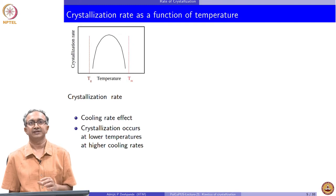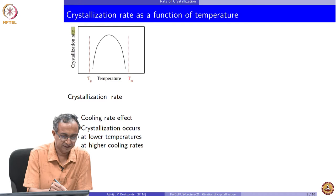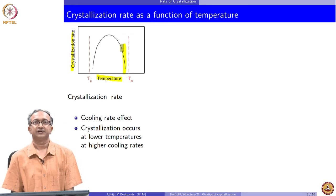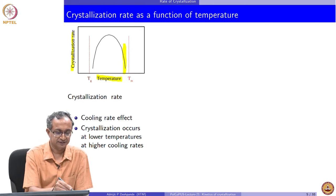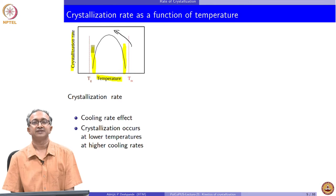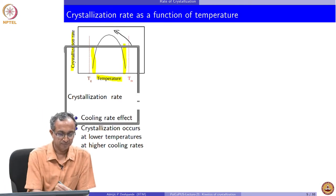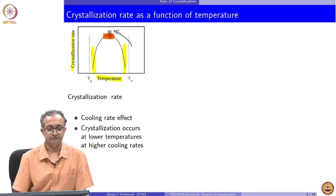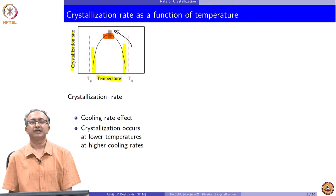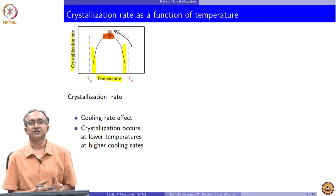Let us look at the crystallization rate a little more closely. If we plot the crystallization rate as a function of temperature, near the melting point the crystallization rate is lower because the driving force is lower there. The rate starts increasing as we go to lower and lower temperatures, but as we approach the glass transition temperature, the crystallization rate drops again. So somewhere between the two transition temperatures, we have the maximum rate of crystal growth.